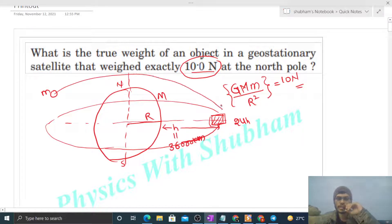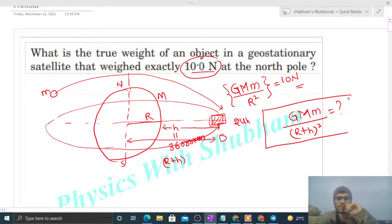True weight is the actual force of attraction by the Earth on this object. So this object is now inside this satellite, meaning its distance from the center of Earth will be capital R plus h. So what will be the gravitational force of attraction by the Earth on this object? That will be capital G capital M small m divided by (R plus h) square. We need to find out this value.